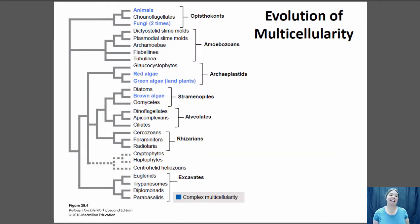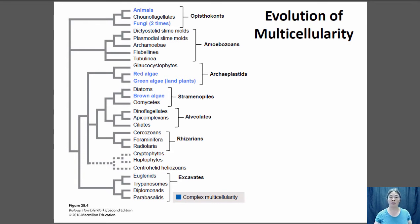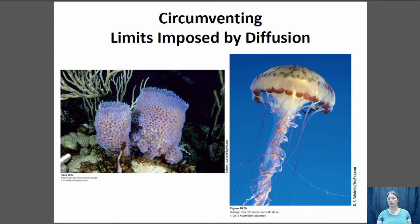Multicellularity has actually evolved at least six separate times into complex multicellularity, where you actually have cell differentiation. It's evolved in the green and red algae — the green algae are the sister group to the land plants — and also in the brown algae and kelp, then in animals, and at least twice in the fungus group. This complex multicellularity, with many different tissue types, has arisen multiple times, so it has some fitness advantage, allowing increased complexity and ability to utilize niches not available to unicellular organisms.